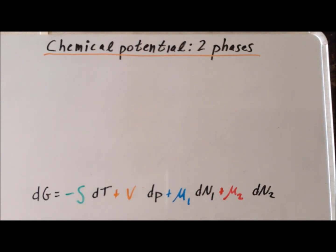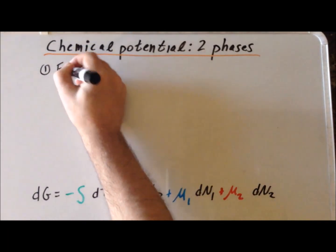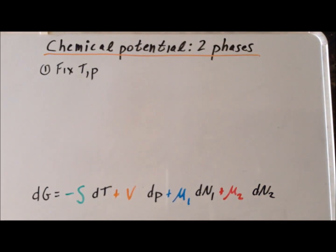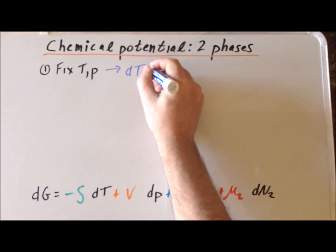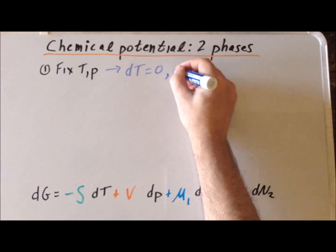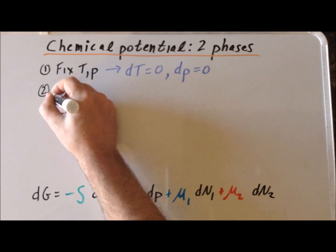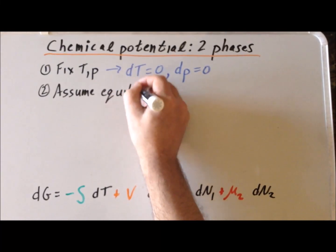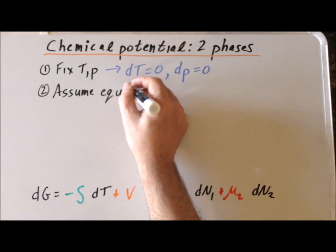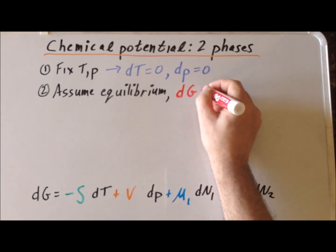Now we are going to do two separate things. The first thing is we are going to fix the temperature and the pressure. As a result, dT is going to be equal to zero, and dP is also equal to zero. The second thing we want to do is to assume that we are at equilibrium, and if we do that, we have that dG is going to be equal to zero.